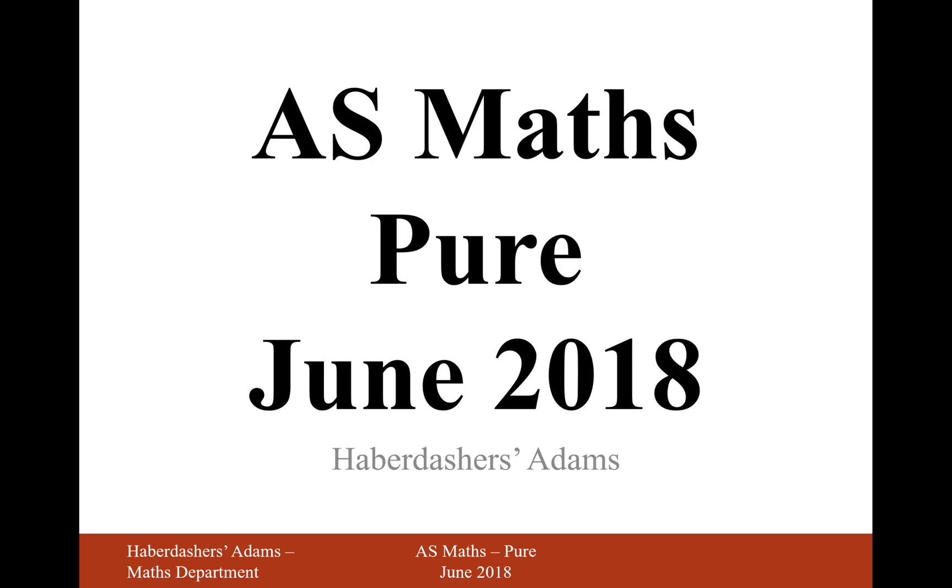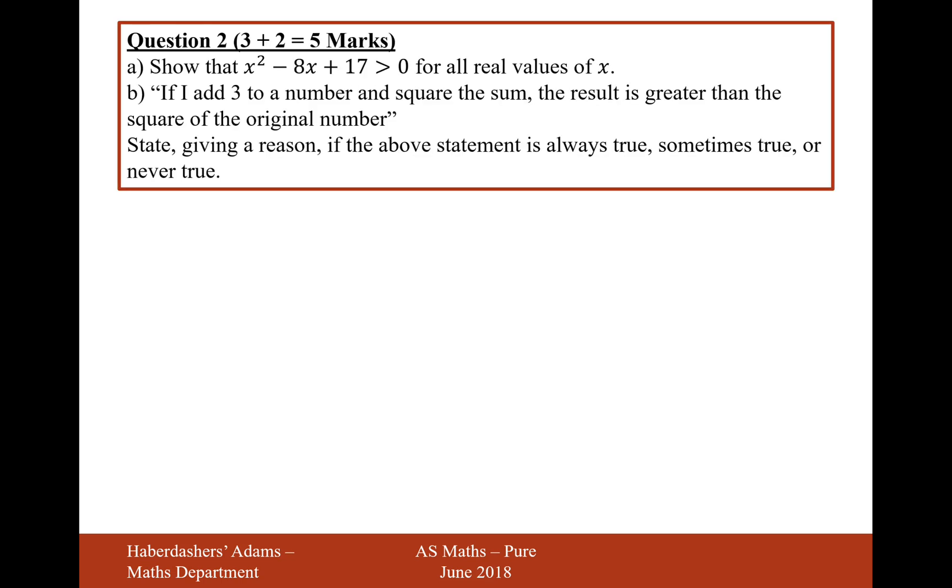Hello there and welcome to the June 2018 paper. Here we're looking at question 2. So question 2a is to show that x squared minus 8x plus 17 is greater than 0 for all real values of x.